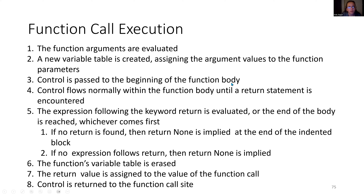Control is passed to the beginning of the function body, and we're going to move into the statements. Control flows normally within the function body until a return statement is encountered. Remember that we had that page on returns — the return does two things. First, it's the stop sign: it terminates the execution of the function. The second thing it does is send out that Amazon box, and the question is always what's in the box.